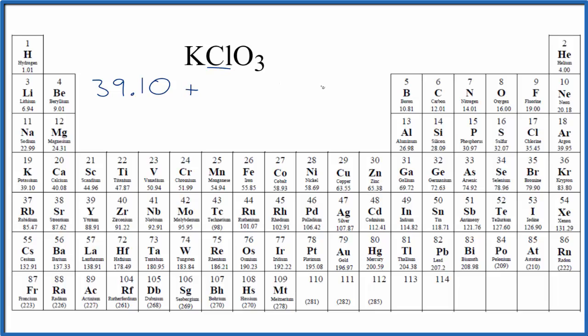Then we find the molar mass for chlorine. We only have one chlorine. So chlorine, 35.45 grams per mole.